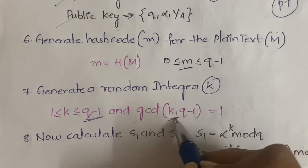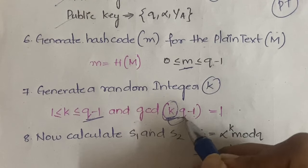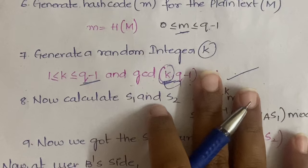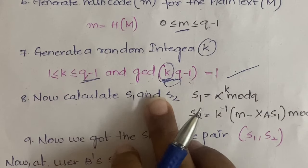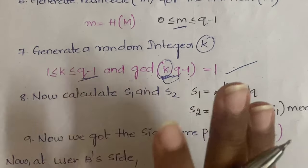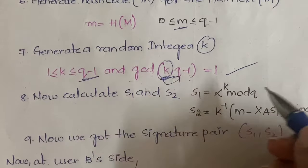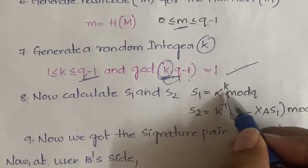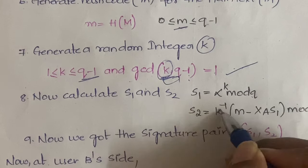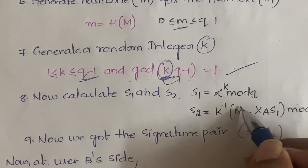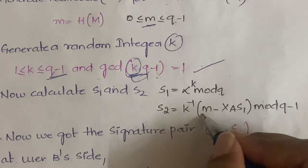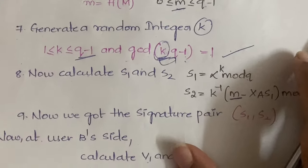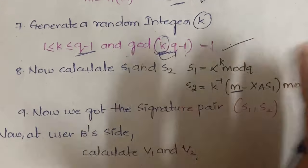The constraint on k is that gcd(k, q−1) must equal 1 — whatever number you assume, its GCD with q−1 must be 1. Next, calculate the signature pair s1 and s2: s1 = alpha^k mod q, and s2 = k_inverse × (m − xa × s1) mod (q−1), where m is the hash code.